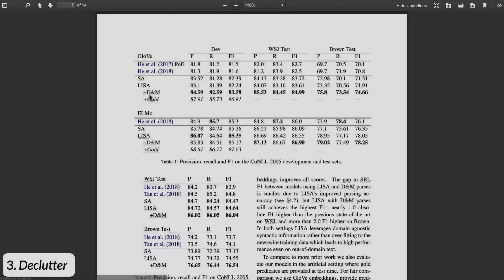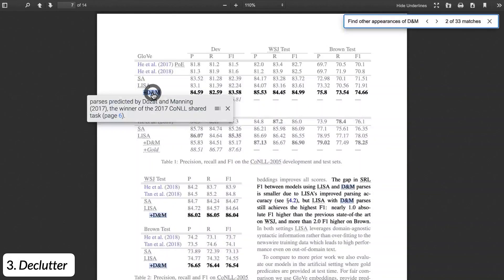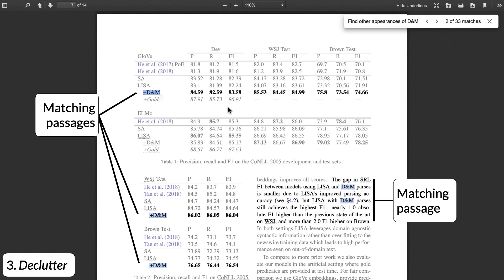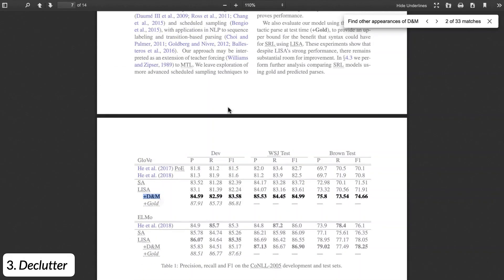The third innovation is called declutter. When a reader selects a term, Scholarfy eliminates visual clutter to help readers scan the paper for usages. It does this by highlighting segments of text that contain matches and fading out the unmatched sentences.